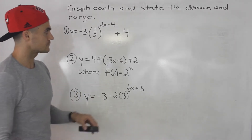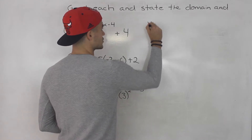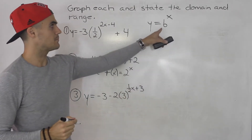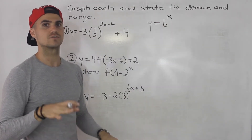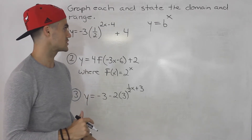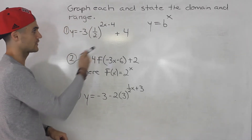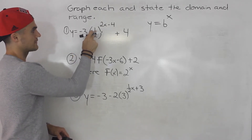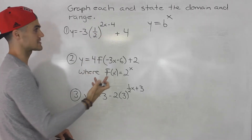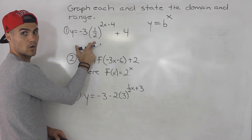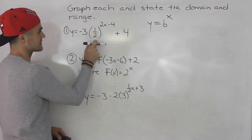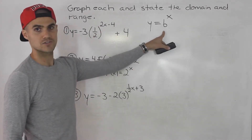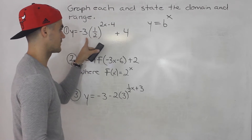In general, exponential functions have a parent function that looks like some kind of base to the power of x. The first step in graphing exponential functions is to figure out what the base is — what the parent function is. For example, in function one, negative three times one half to the power of two x minus four plus four, the base is one half. So the parent function would be one half to the power of x.